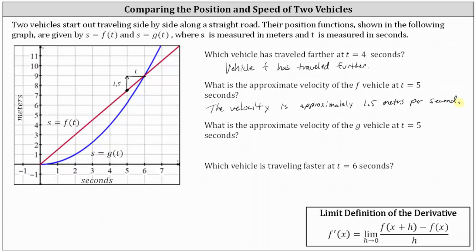Next, what is the approximate velocity of the g vehicle at t equals five seconds? Now we focus on the blue graph. At t equals five, we have this point here, and we need to sketch the tangent line at this point, then find its slope to approximate the velocity. From the point of tangency, if we go up three units and right one unit, the slope of the tangent line is three divided by one, or three, which indicates the approximate velocity of the g vehicle at t equals five seconds is three meters per second.